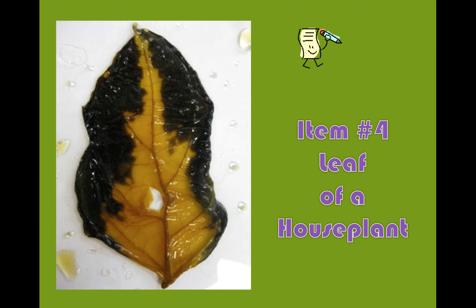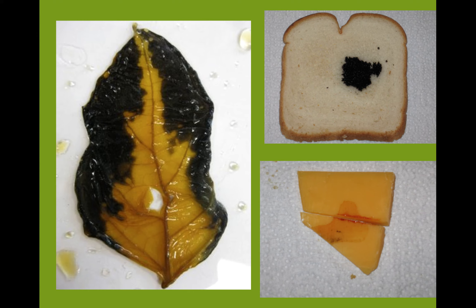Now let's look at our next item, the leaf of a house plant. Here is a particular leaf that had iodine put on it, and you can see again when we compare that with our two controls that there was indeed starch in the leaf of the plant, and it was turned very dark blue by the iodine. So again, we confirm that this plant has produced starch and stored it in its leaves.